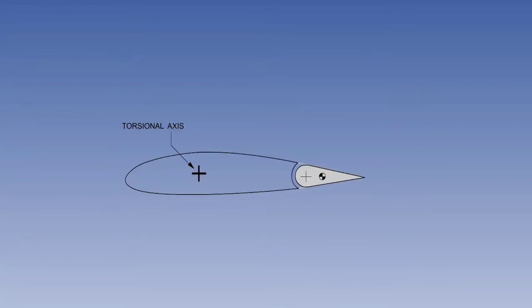Control surface flutter can affect the ailerons, the elevator and the rudder. Of the three, we will consider aileron flutter being perhaps the easiest to visualize.